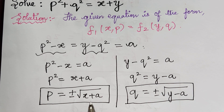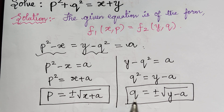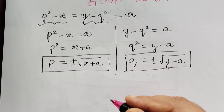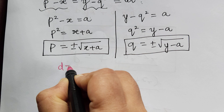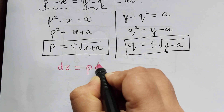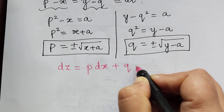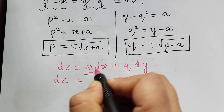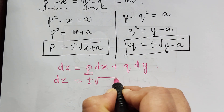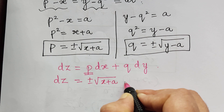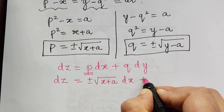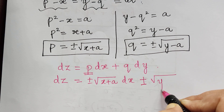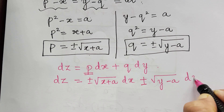Therefore, we have obtained the value of p and the value of q. Now, we have to substitute p and q in the equation dz is equal to p dx plus q dy. So, when we substitute, dz will be equal to plus or minus square root of x plus a dx, plus plus or minus square root of y minus a dy.